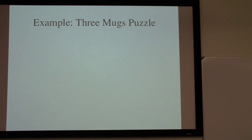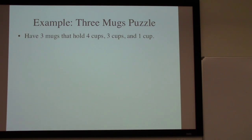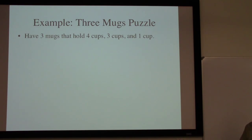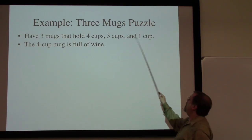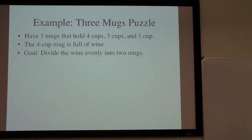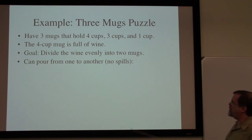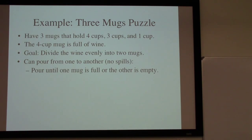Let's look at a simple example — a simplified form of a puzzle from 15th century Europe. This is a three mugs puzzle: I have three beer mugs or steins. One holds four cups of wine, one holds three cups, and the third holds one cup. Right now the four-cup mug is completely filled with wine and the other two are both empty. Two people would like to share the wine, so we'd like to divide it evenly between the two friends. We're allowed to pour from one mug into another, assuming no wine spills.